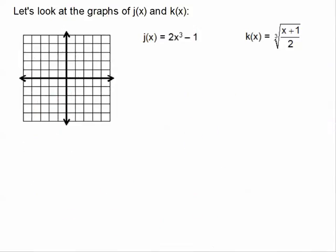What I'd like to explore now is what the graphs look like and make a graphical exploration. So j of x, I'm going to graph this in red. This is a basic cubic that has shifted down one unit and has been stretched twice as much. The basic cubic usually starts at 0,0, so I'm going to put my first point one unit below that because of the vertical shift. This is a sketch of our cubic function — that's j of x.